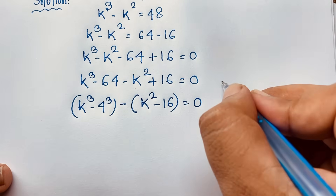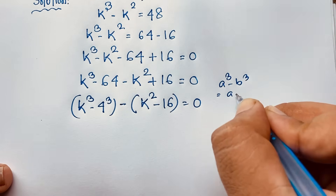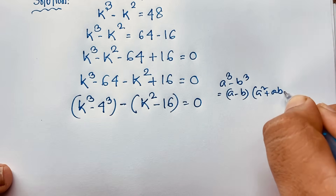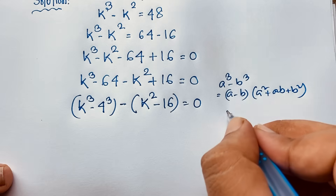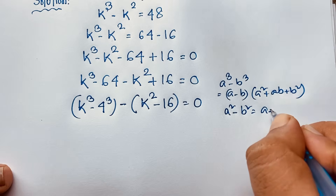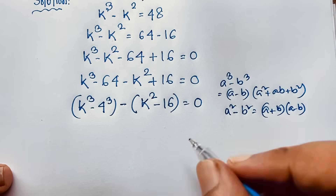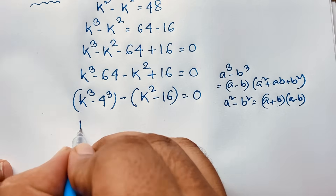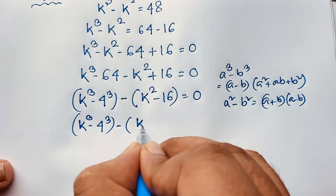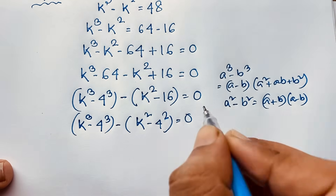Now recall the formula: a cubed minus b cubed equals a minus b times a squared plus ab plus b squared. Also, a squared minus b squared equals a plus b times a minus b. I apply both formulas here: k to the power 3 minus 4 to the power 3, and k squared minus 4 squared which is 16, all equal to 0.